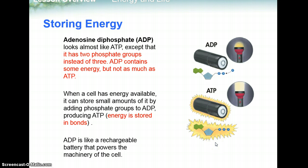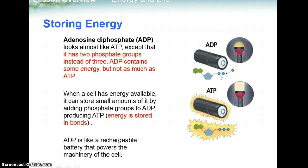For storing energy, we're going to be using ADP, adenosine diphosphate, and converting that to ATP, adenosine triphosphate. ADP looks very similar to ATP — it has an adenine, it has a ribose sugar, but instead of three phosphates, adenosine diphosphate has two. That's where the prefix di comes in. ADP does not have as much stored energy as ATP because it has one less chemical bond compared to ATP.